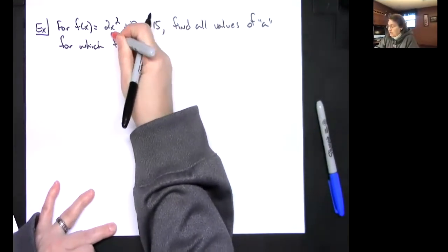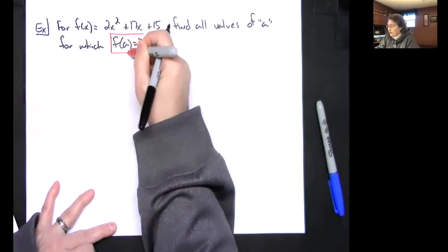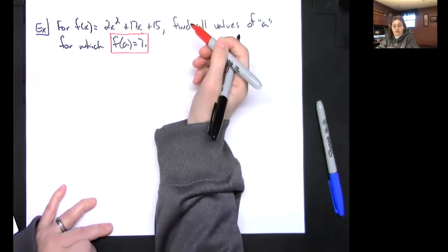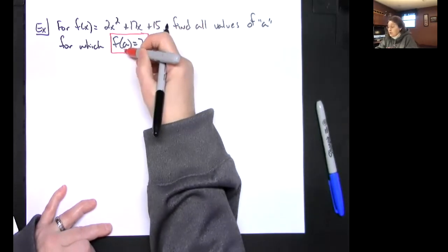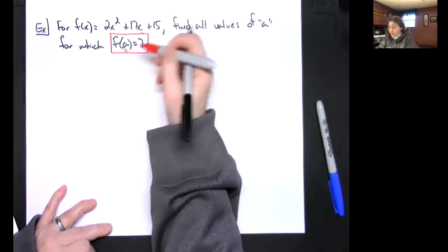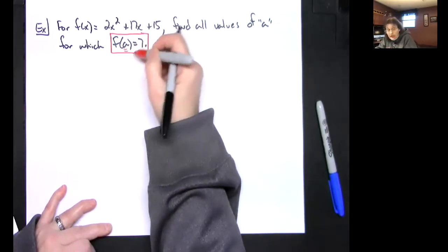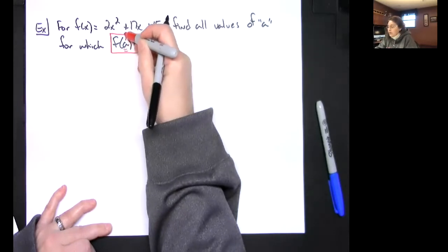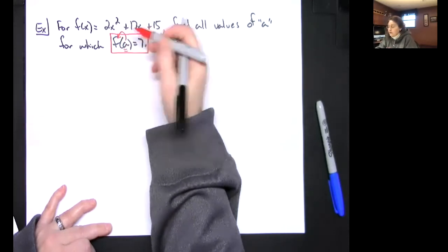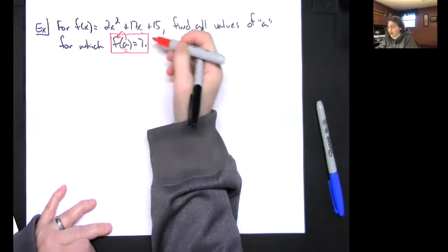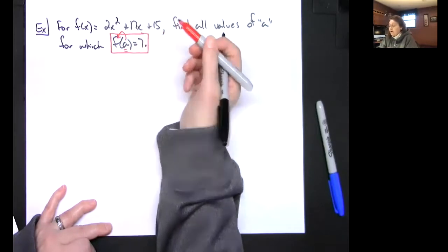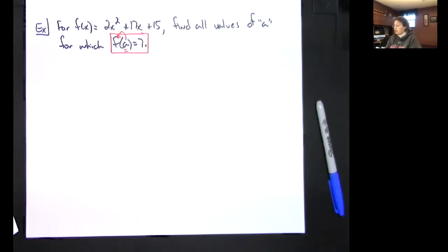This part right here in the question tells you everything that you're going to need to do. If you can read this mathematically, you're going to be good. This says take 'a', put it into the function, and then whatever you get there, set it equal to 7. And then you are solving for all the values of a.